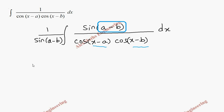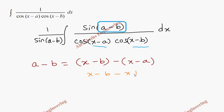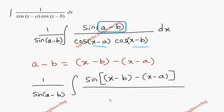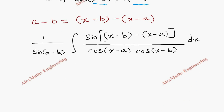Now I have to replace (a-b) in terms of (x-a) and (x-b). That can be done by writing a-b as (x-b) minus (x-a). If I simplify this: x minus b minus x plus a — the x terms cancel — leaving a minus b. So (a-b) is written in the form of (x-b) minus (x-a). Outside 1/sin(a-b) stays, and the integral has sin[(x-b) minus (x-a)] divided by the denominator as it is. We then take this as the sin(A-B) form.